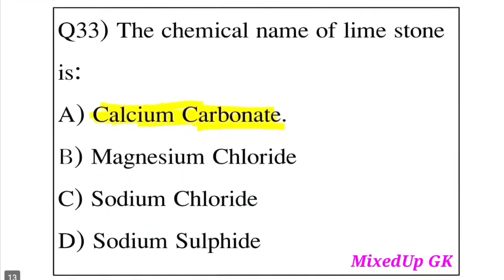Question 33: What is the chemical name of limestone? Option A: Calcium carbonate. Option B: Magnesium chloride. Option C: Sodium chloride. Option D: Sodium sulphide. The answer is Option A, Calcium carbonate. The chemical name of limestone is calcium carbonate.